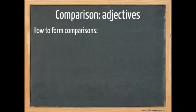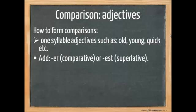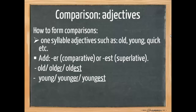How to form comparisons? When it concerns one syllable adjectives such as old, young and quick, we simply add -er to the adjective for the comparative and -est to the adjective for the superlative. So we have the adjective old and the comparative is older and the superlative is oldest. The same goes for young: young, younger, youngest and quick, quicker, quickest.